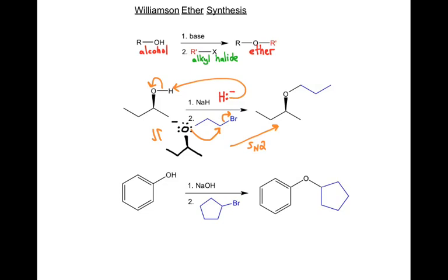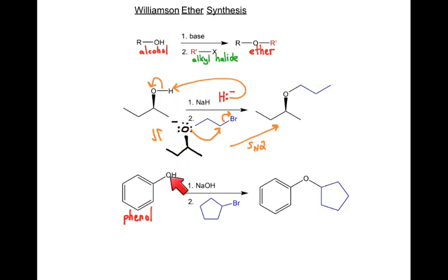This reaction works well with alcohols, but it also works very well with phenols. The Williamson ether synthesis is very effective for phenols. There is one small difference: a phenol is much more acidic than an alcohol, so we don't need to use as strong a base. Sodium hydride is very strong and is used to deprotonate alcohols, which typically have pKAs of about 16. Phenols have pKAs of about 10, so we don't need such a strong base — sodium hydroxide works instead.